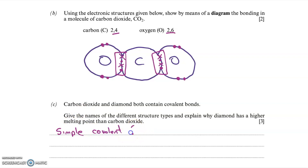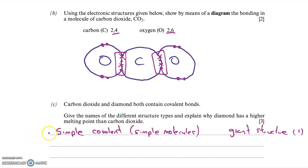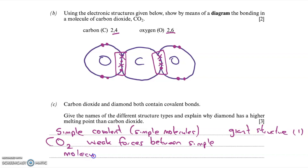For part C, carbon dioxide and diamond both contain covalent bonds, but you need to give the names of their different structure types and explain why diamond has a higher melting point. Carbon dioxide has a simple covalent structure — it's made up of simple covalent molecules. Diamond has a giant covalent structure. You get one mark for the correct structures. Carbon dioxide has weak forces between its molecules — one mark for saying that. Diamond has a giant structure with strong covalent bonds in all directions — one mark for that. So three marks total: one for correct structures, one for weak intermolecular forces in CO₂, and one for strong bonds in all directions in diamond.